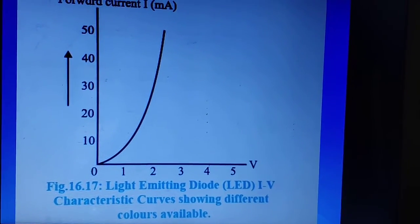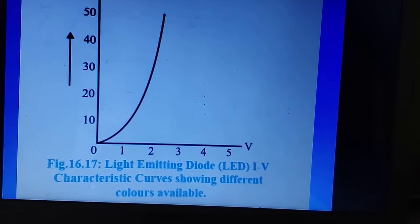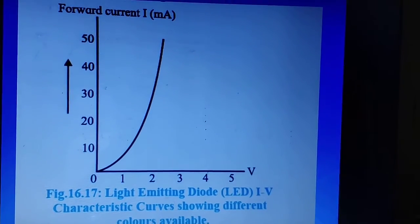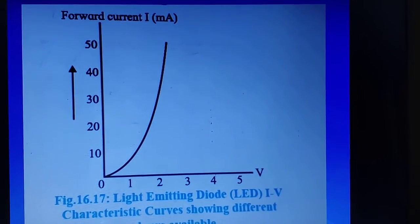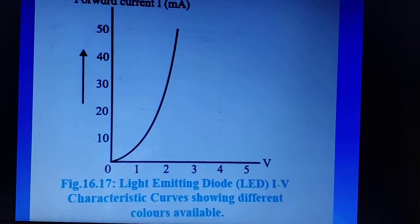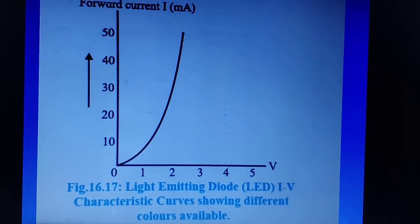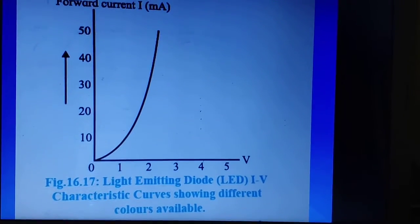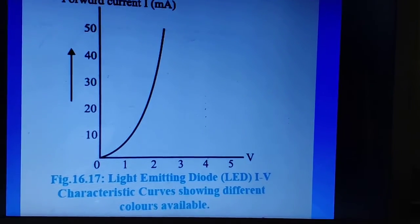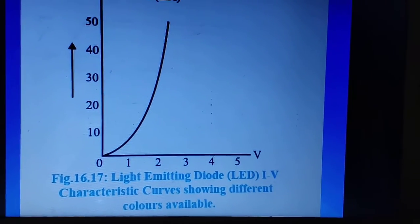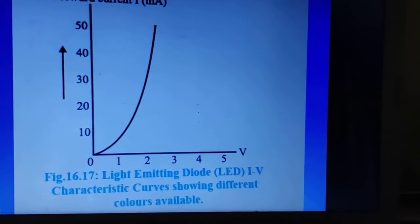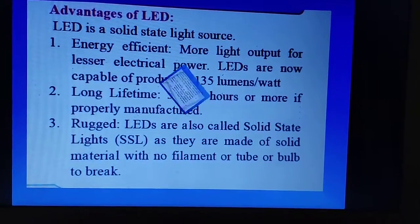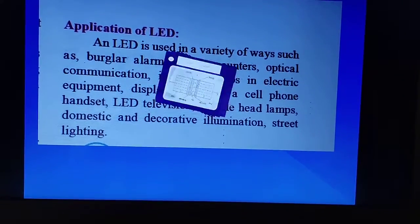So these are the various characteristic curves showing different colors available for the photodiode. How the photodiode works? It works on the principle of Bohr's third postulate. Whenever the electrons undergo transition from a higher energy level to a lower energy level, then the excess of energy is given out in the form of radiations. That typical radiation is in the form of light. So this light emitted by the photodiode depends upon the type of material used to construct the photodiode. Let us see first the construction of the photodiode.